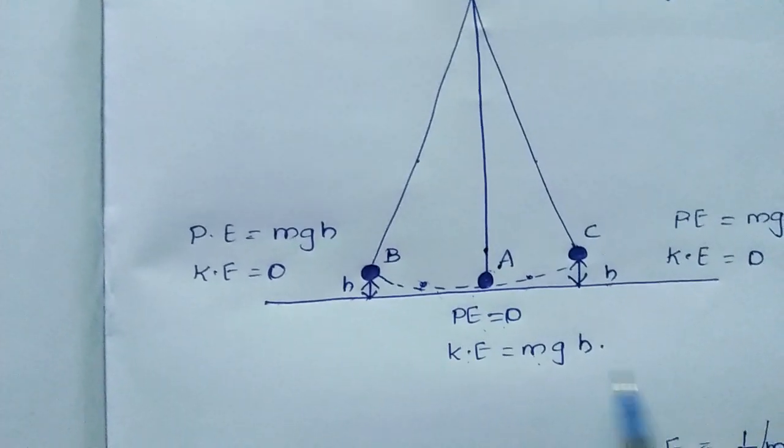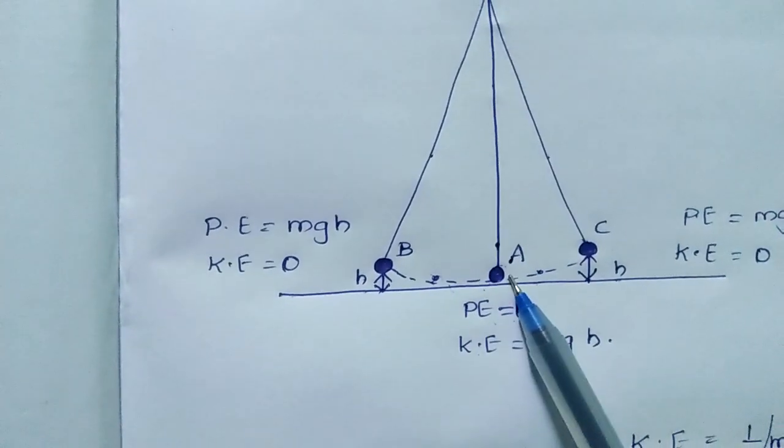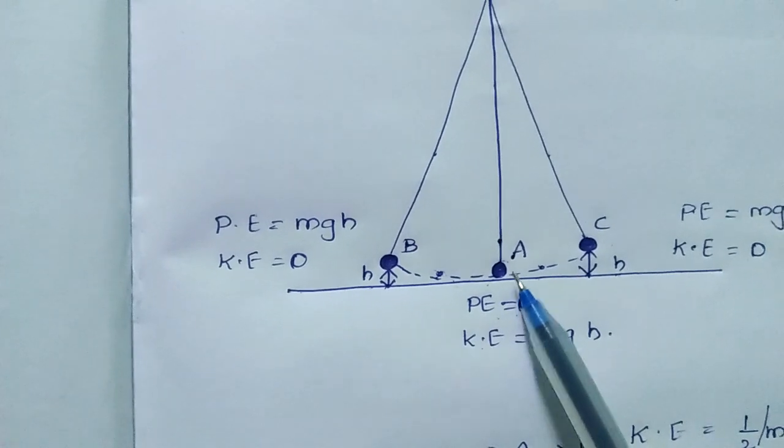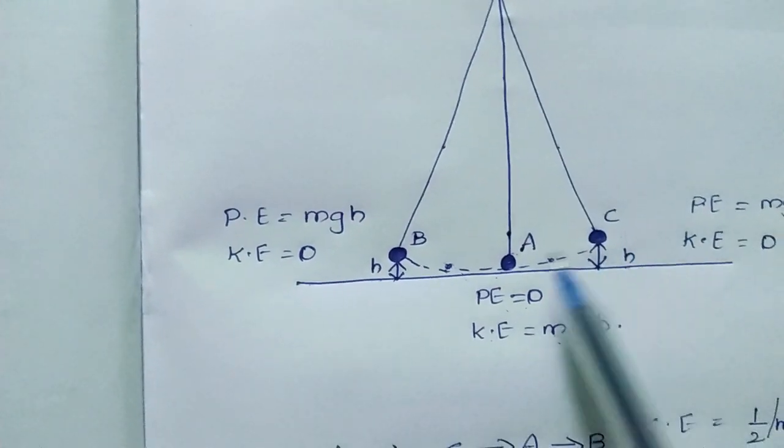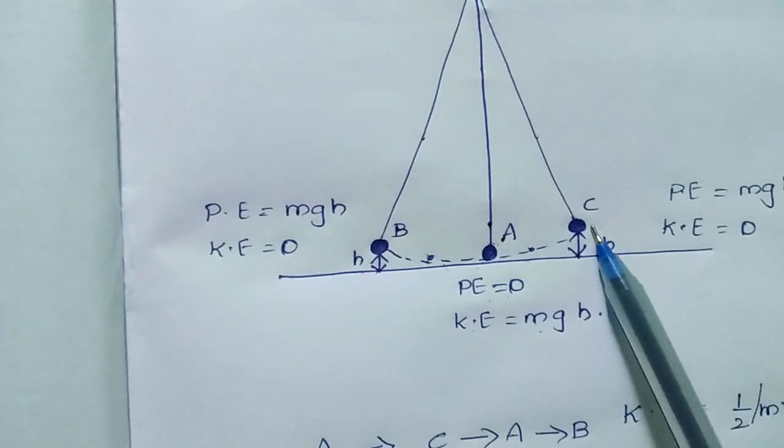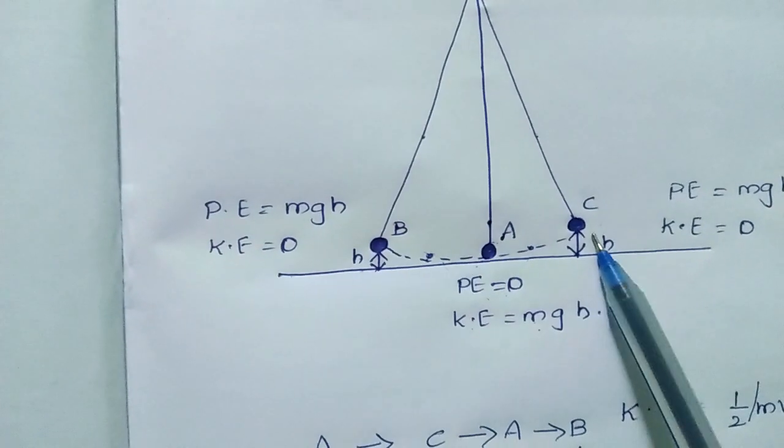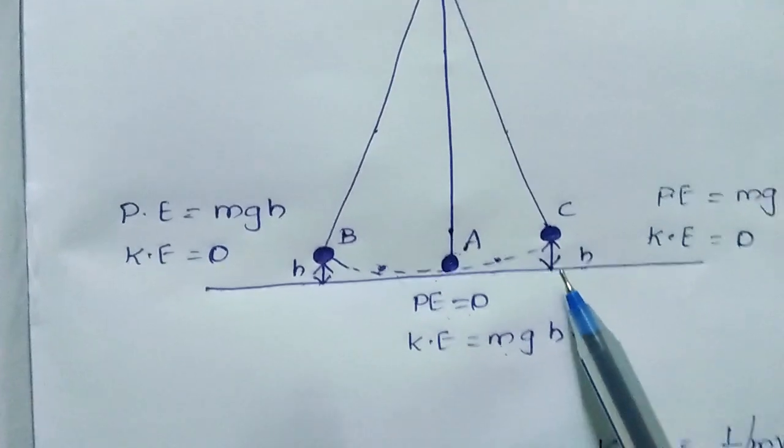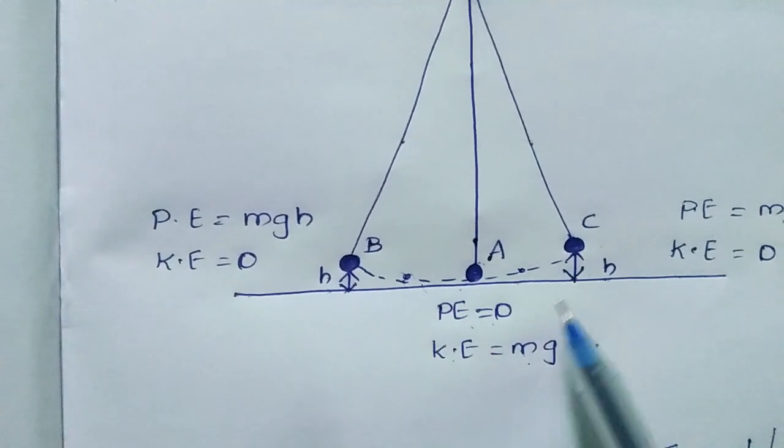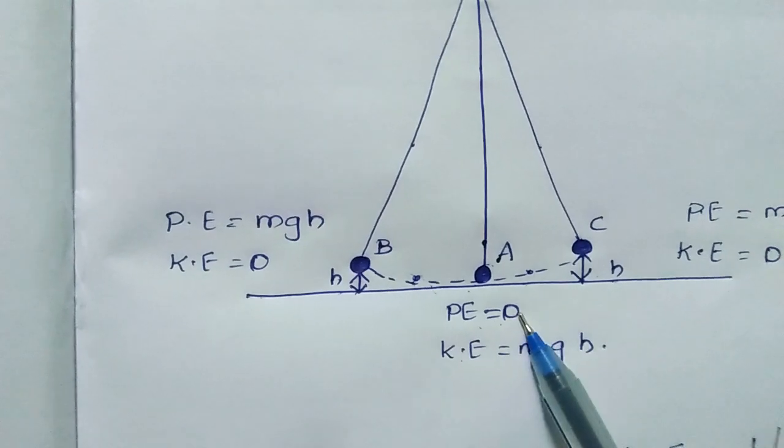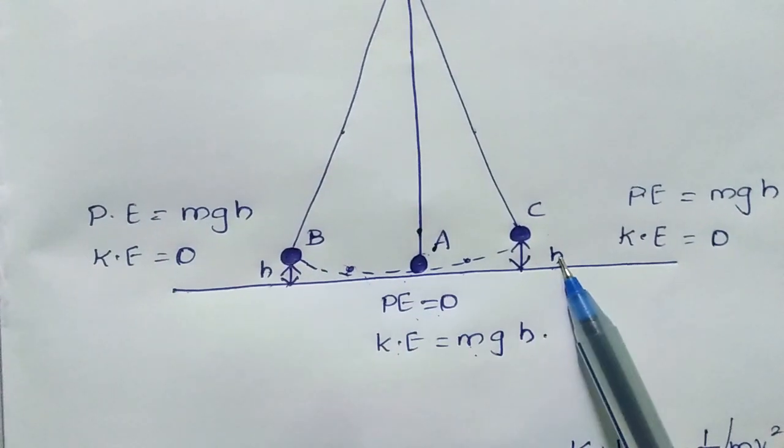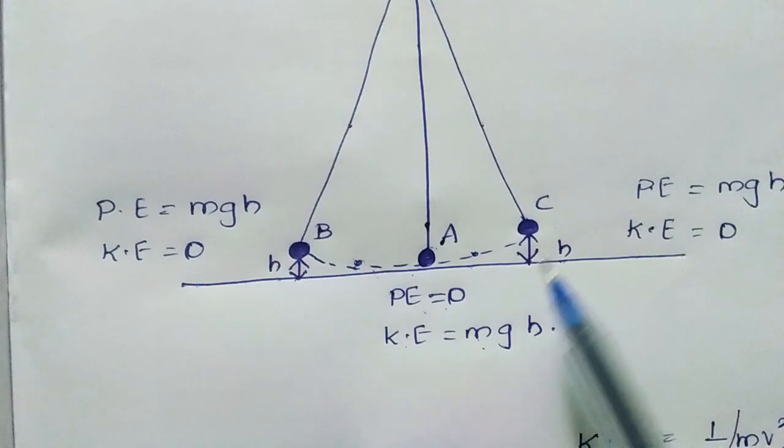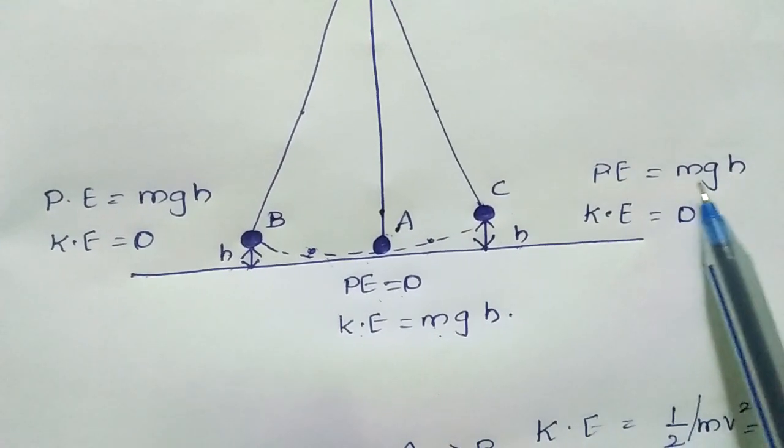The bob is at mean position A, and when it is displaced to one side and then released, it will reach position C where an increase in height is noticed. When the potential energy is zero at the mean position A, then due to the increase in height, the potential energy of the bob will become mgh.